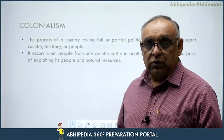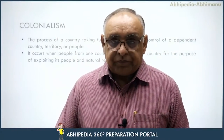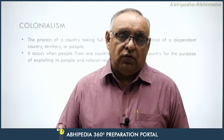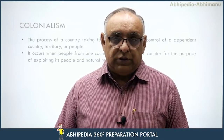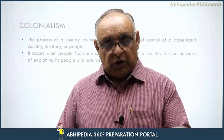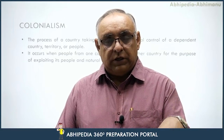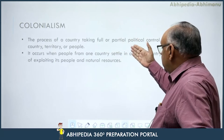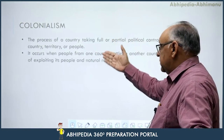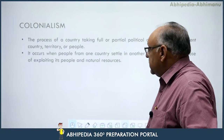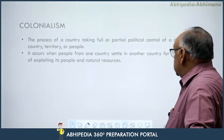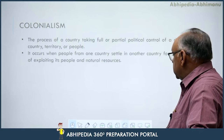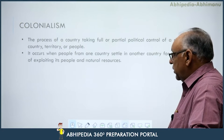Colonialism क्या होता है? Colonialism में दो countries होती हैं — जब एक country किसी दूसरी country के ऊपर अपना political control exercise करती है with a view to exploit the people and resources of that country, then the host country which is being exploited or ruled is known as the colony. So, colonialism is a process of a country taking full or partial control of a dependent country, territory, or people. Colonialism में एक country दूसरे country के ऊपर अपना political control लेता है और वो दूसरा country उसका dependent country होता है।